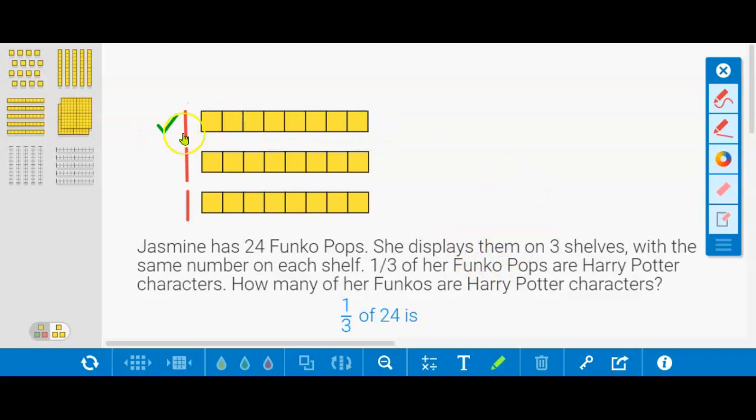So one of those shelves, the one that's checked green, is going to be her Harry Potter characters because the problem says one third of 24. So on one shelf, she has 8 Funko Pops, 8 Harry Potter characters.